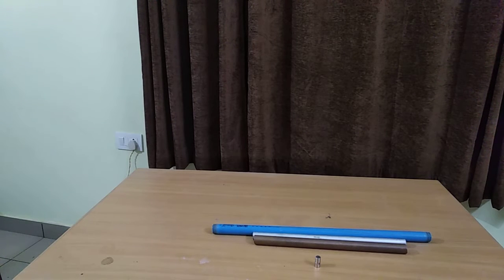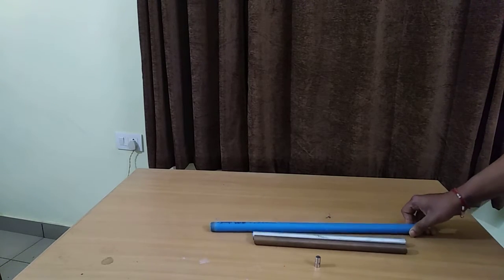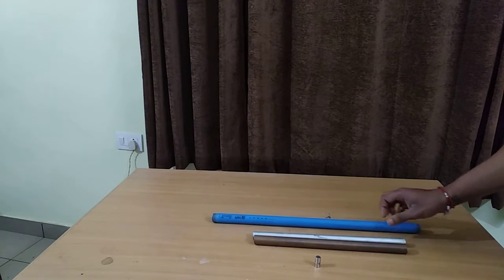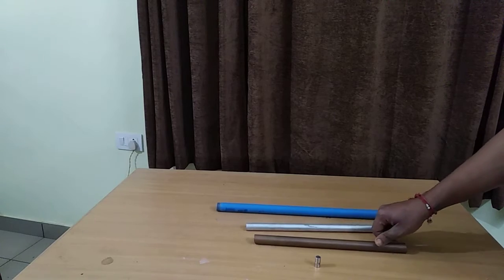Hello and welcome back to StudyLabs. This is our demo number 13 in physics, and in this demo we have three pipes or tubes. The first one is made of plastic or PVC, the second one is of aluminum, and the third one is a copper tube.